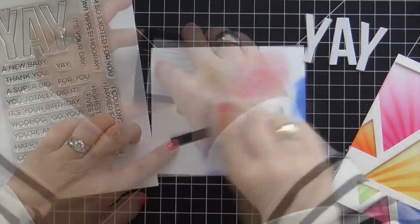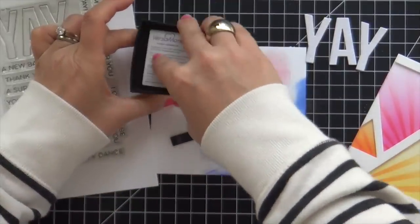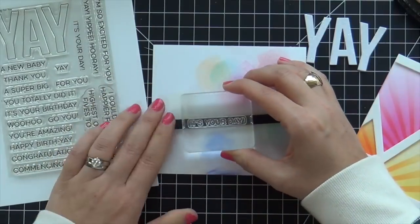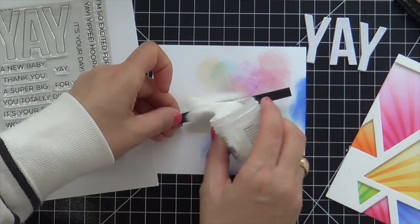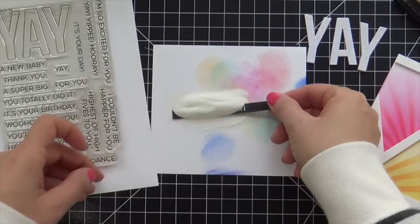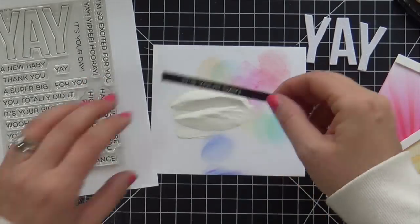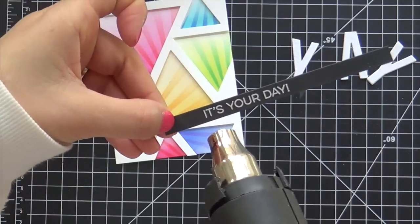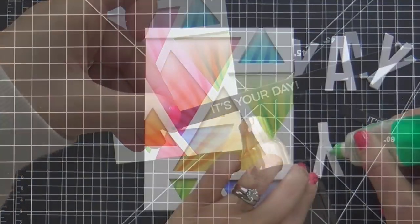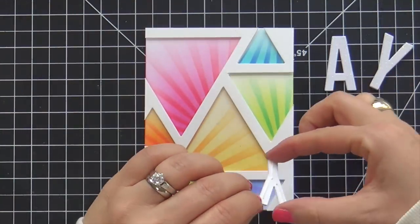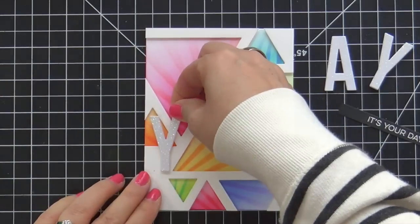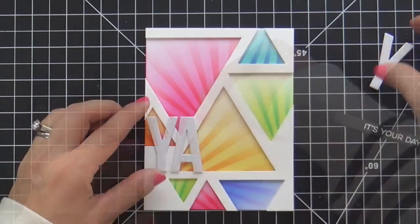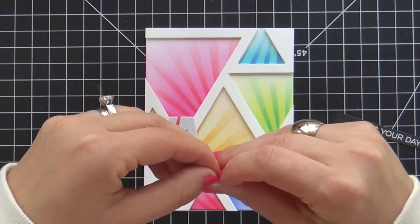To go along with it, I'm going to emboss a coordinating sentiment. I'm using the Yay For You stamp set - you can see it right there on the left. It has a lot of really fun sentiments that coordinate with the Yay dies. I'm embossing it in white on a strip of black cardstock. I like to do this when I have a lot of color on my card. I like to do a white sentiment that's embossed on a black strip - it really pops.